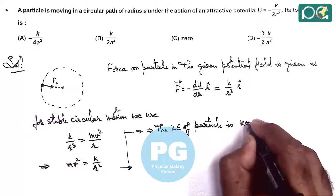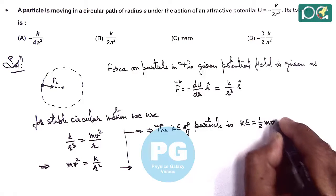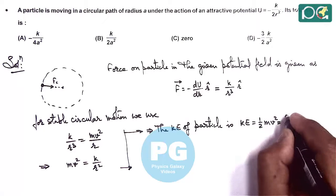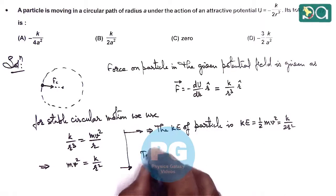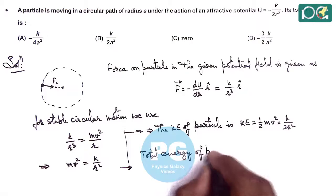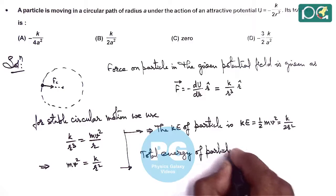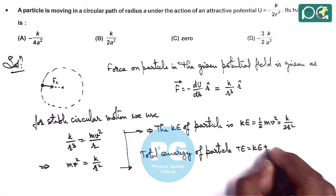The kinetic energy is KE = (1/2)mv² = K/(2R²). The total energy of the particle is kinetic energy plus potential energy.